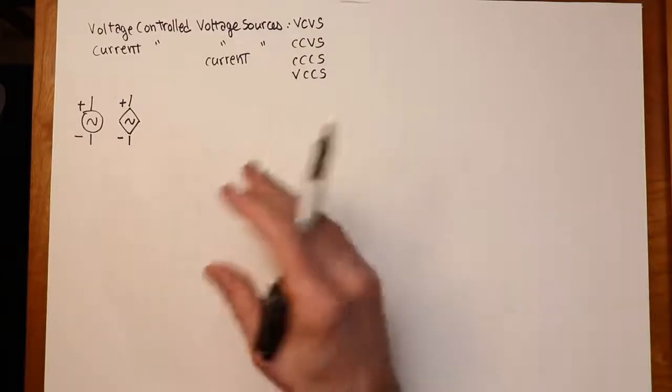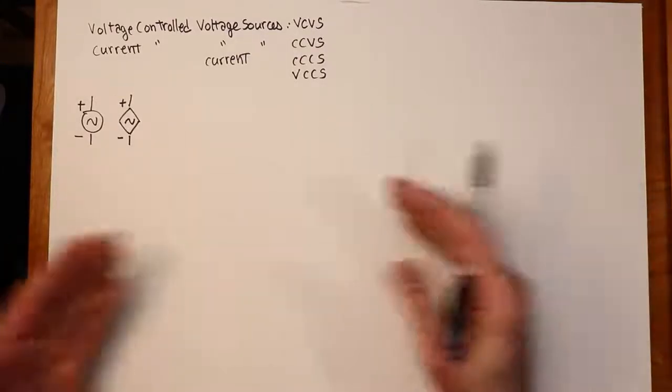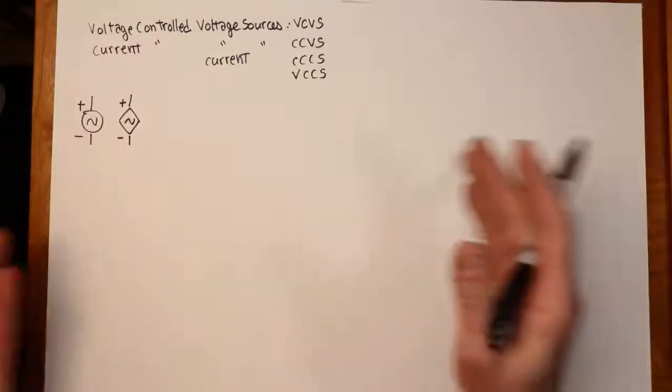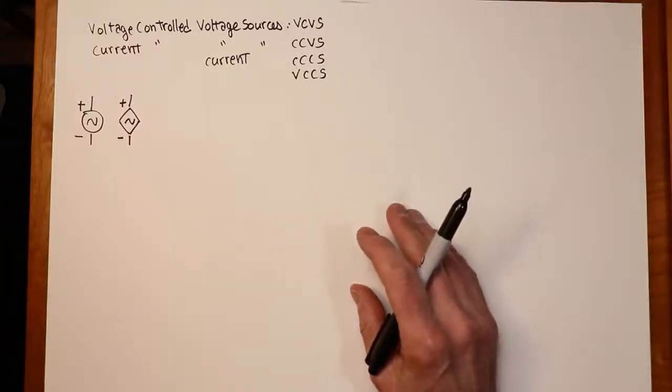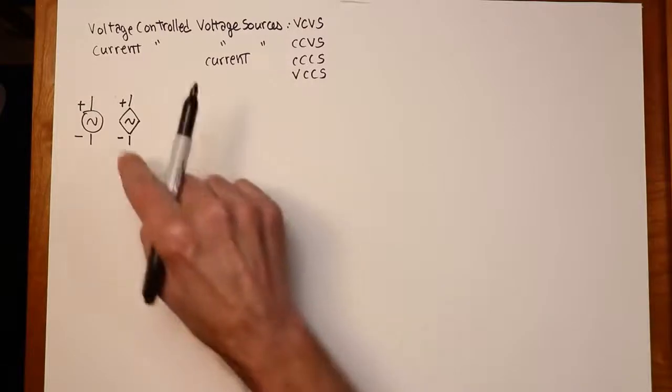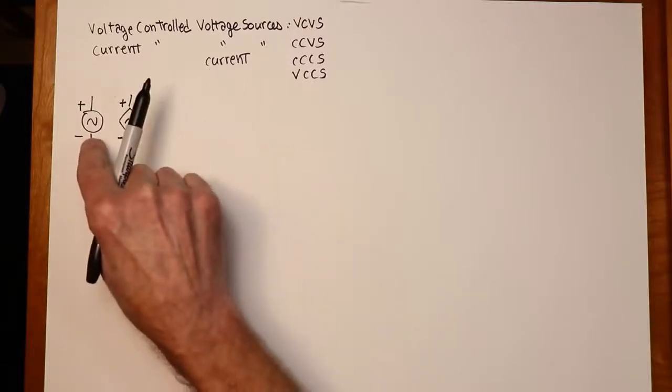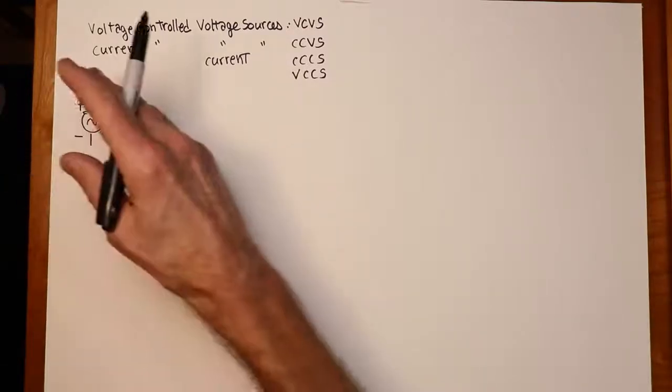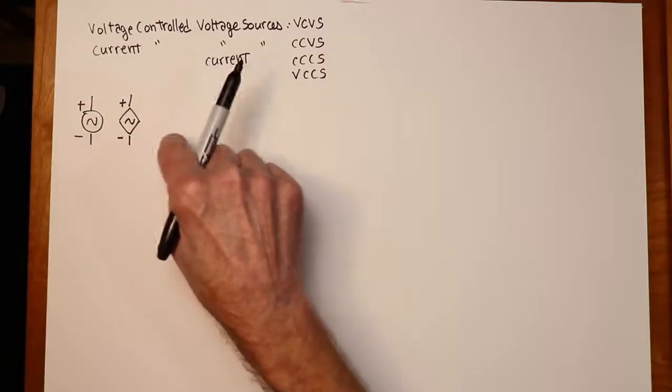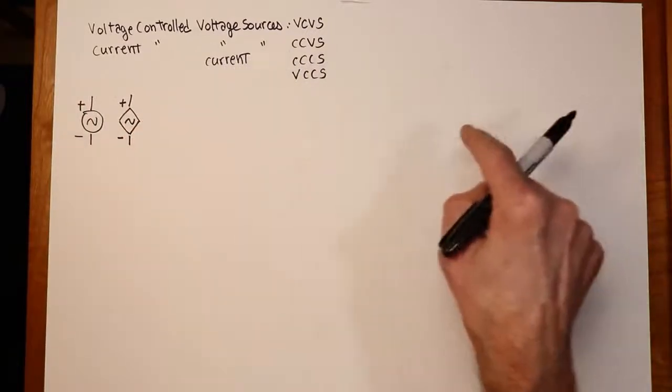It doesn't really matter. As a matter of fact, it could be shaped like a Pentagon. You would know that it's a controlled source simply from context, because this wouldn't be a fixed value. Whereas this would be something like a volt, this is a value that depends on some other current or voltage.